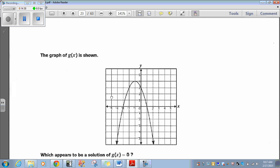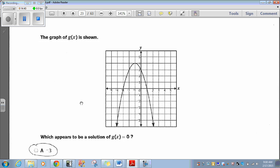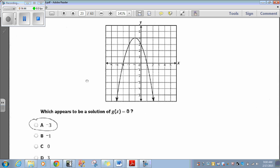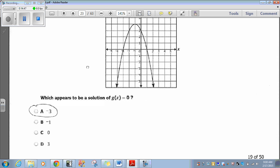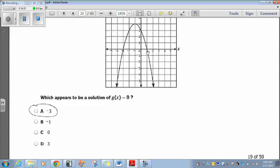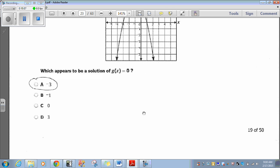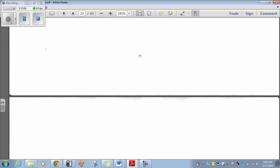Let's go on to question 19. The graph of g of x is shown, which appears to be a solution of g of x equals 0. So, we're looking for zeros here. So, it looks like 1, 2 on this parabola. Well, it looks like 1 is a zero, positive 1, and it looks like negative 1, negative 2, negative 3. Negative 3. So, positive 1 and negative 3. Choice A. That one was really simple.